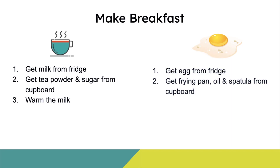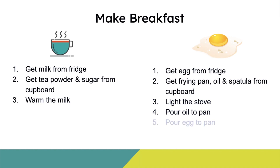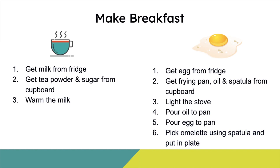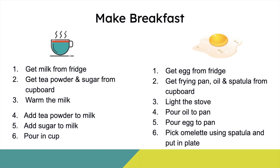I'll get egg from the fridge, get the frying pan, oil and spatula from the cupboard. I'll light the stove, pour oil to the pan, pour egg to pan, and then pick the omelet using the spatula and put it in the plate. Once the omelet is done, by this time the milk will also be warm. So I come back to making tea and finish the work — add tea powder to milk, add sugar to milk, and finally pour the tea in the cup. So both tasks are completed.